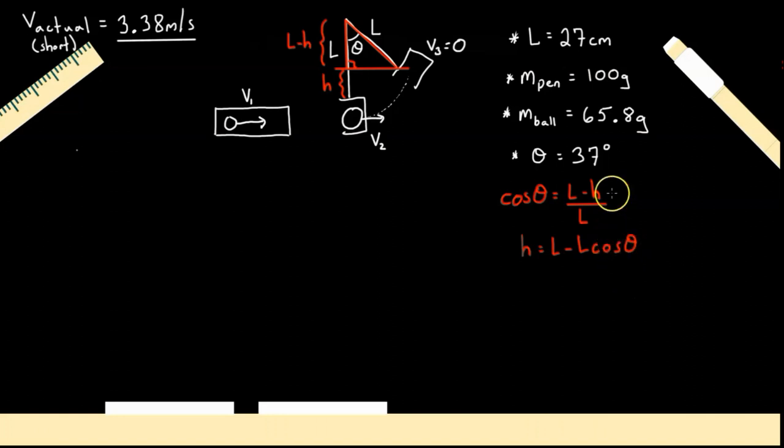Now since we know what all of these are, we know what L is and we know what θ is, we can calculate h to be, and let's convert this into meters, so 0.27 meters, we get h to be 0.0544 meters.